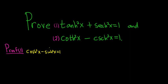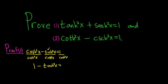Here we have a hyperbolic sine, so what we'll do is divide everything by hyperbolic cosine squared. That will give us the hyperbolic tangent squared. Dividing everything by this gives us 1 minus hyperbolic tangent squared, and then 1 over hyperbolic cosine squared is hyperbolic secant squared. We're almost there. If we add hyperbolic tangent squared to both sides, we get hyperbolic tangent squared of x plus hyperbolic secant squared of x is equal to 1. And that completes the proof.